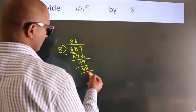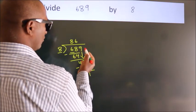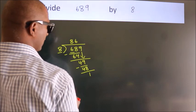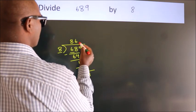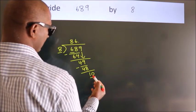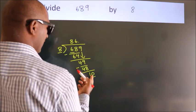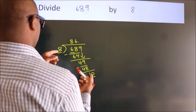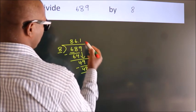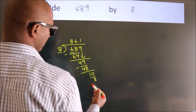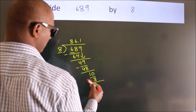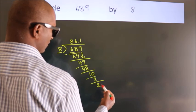After this, there are no more numbers to bring down. So what we do is put a decimal point and take 0, making it 10. A number close to 10 in the 8 times table is 8 × 1 = 8. Now we subtract, and we get 2.